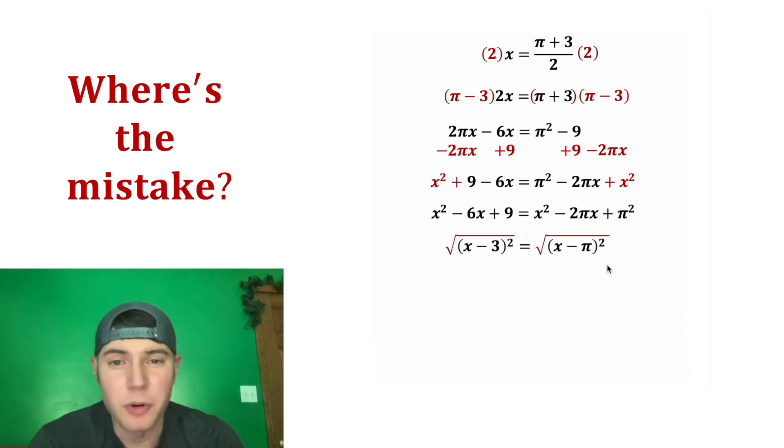Now from this step let's square root both sides. On the left hand side the square and the square root cancel each other out so we have x minus 3. And on the right hand side the square and the square root cancel each other out so we have x minus pi. We'll end up with x minus 3 equals x minus pi.